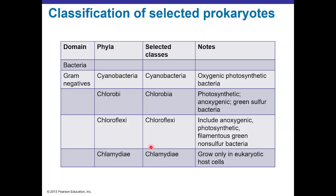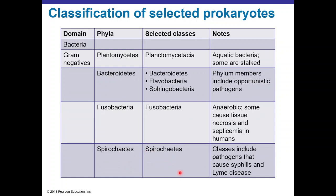Chloroflexi is also anoxygenic photosynthetic, just like Chlorobi, but there is a difference in the pigment — Chloroflexi is green non-sulfur bacteria while Chlorobi is green sulfur bacteria. Chlamydia is a gram-negative group that is an intracellular parasite growing only in eukaryotic cells. Other gram-negative classifications include bacteria that live in aquatic environments like Planctomycetes.